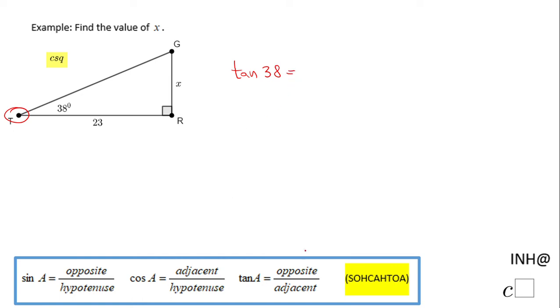Again, opposite, so that means this X over adjacent. Opposite leg over adjacent leg, that is 23. And we have to solve for X here.